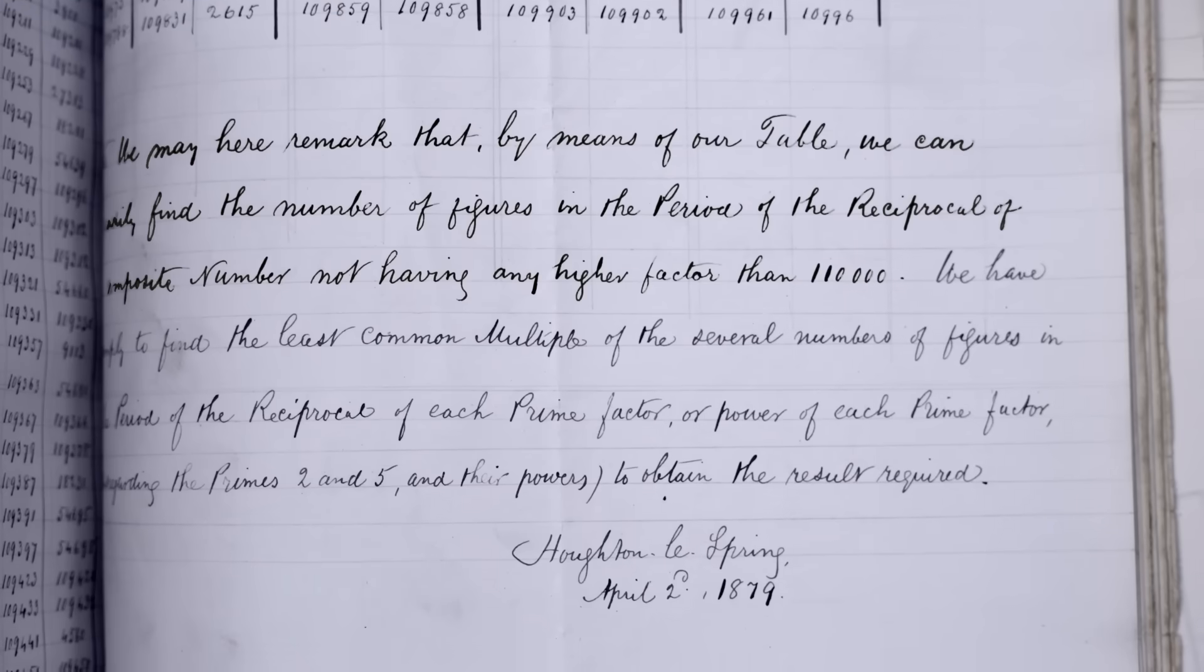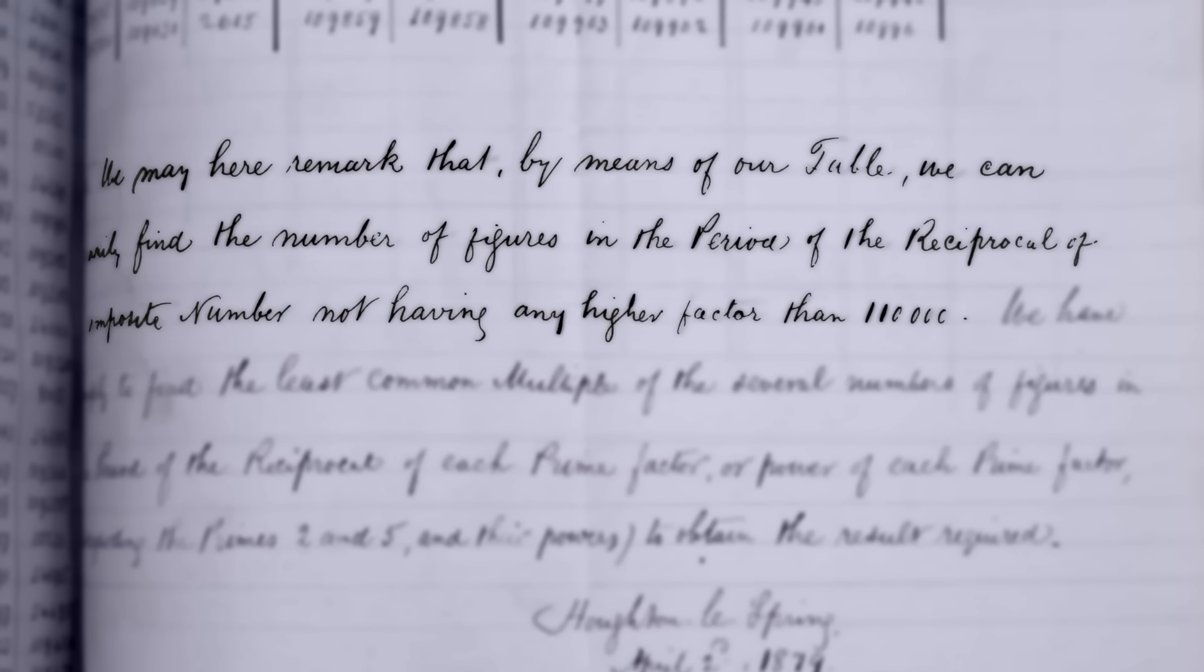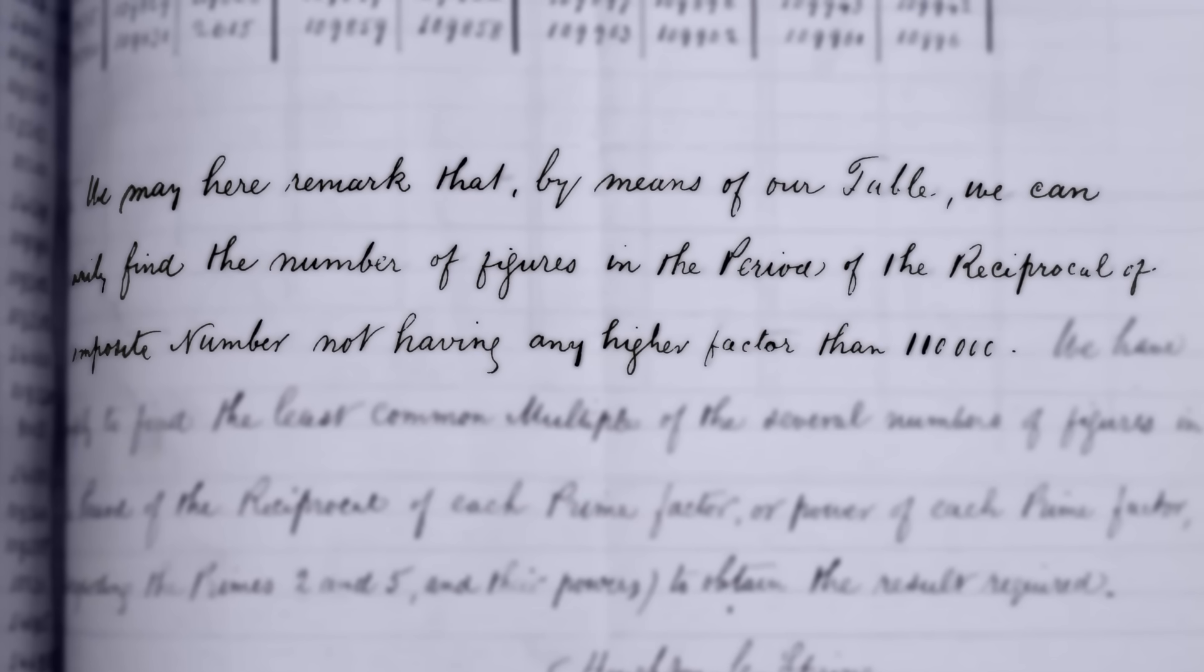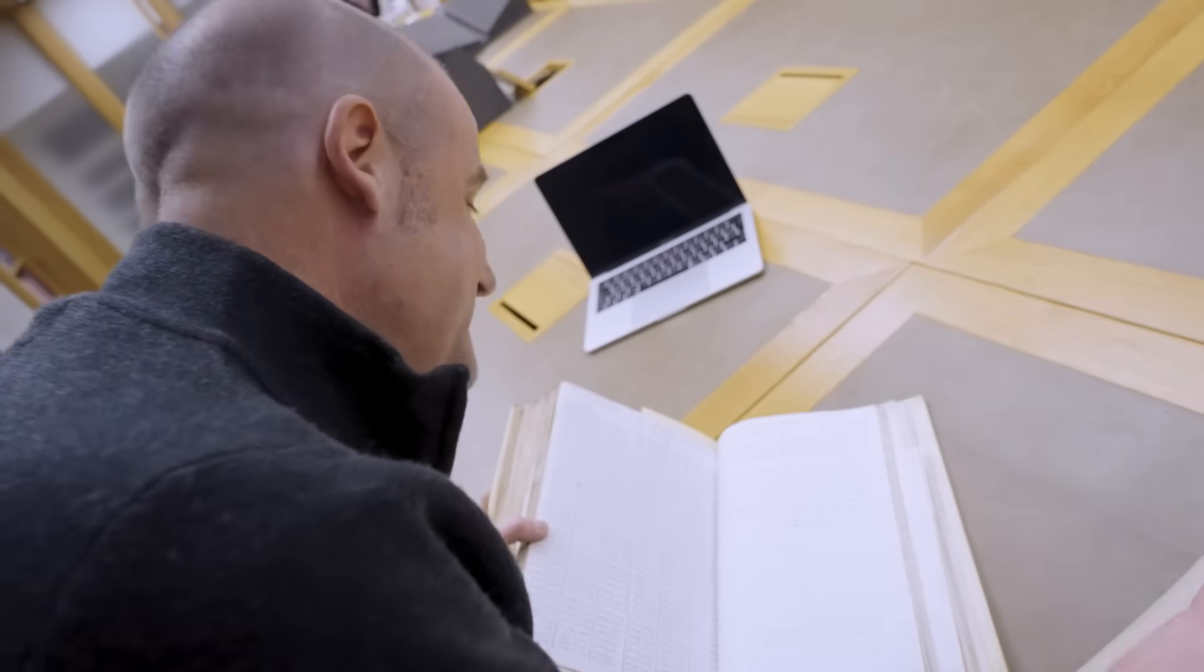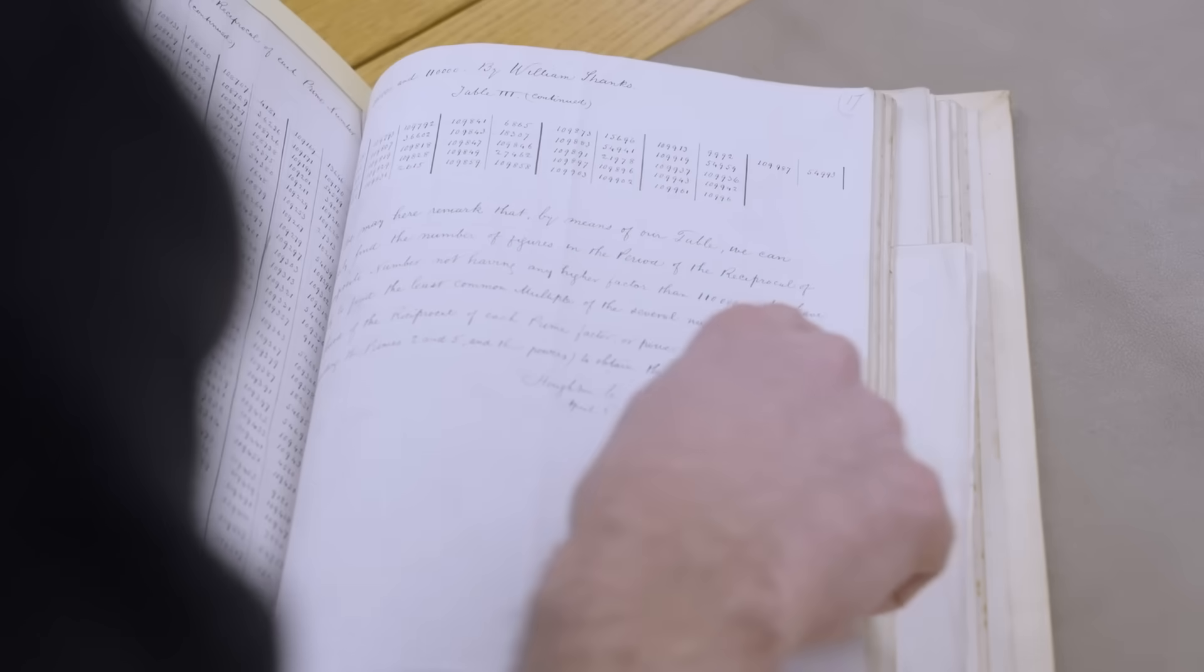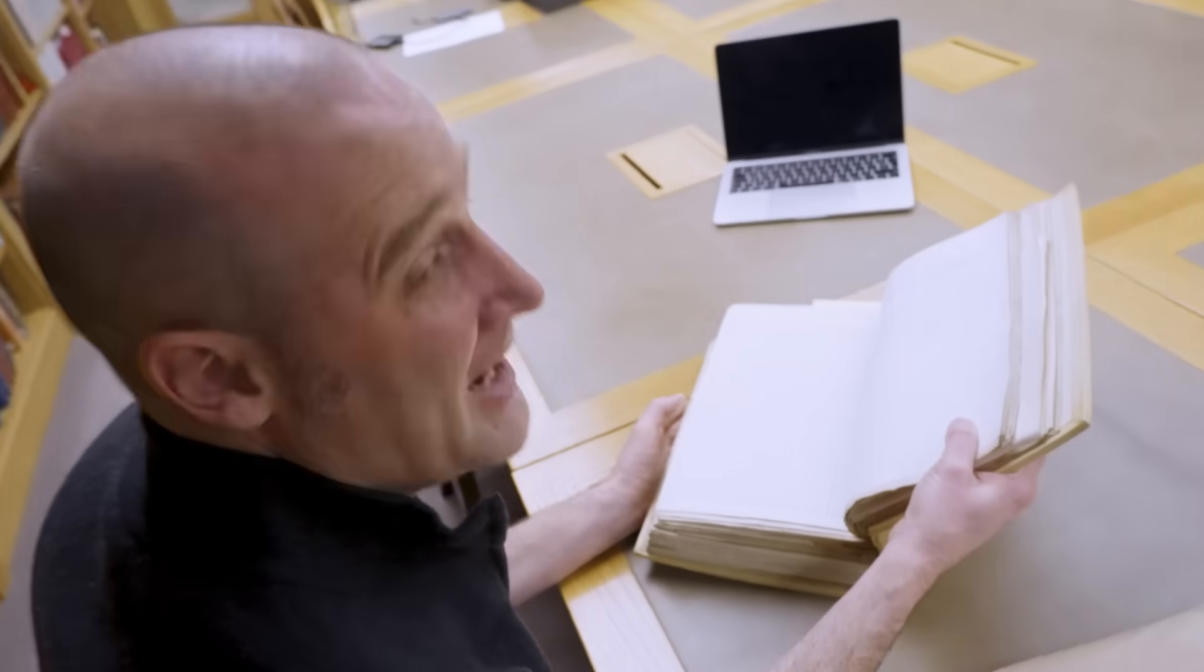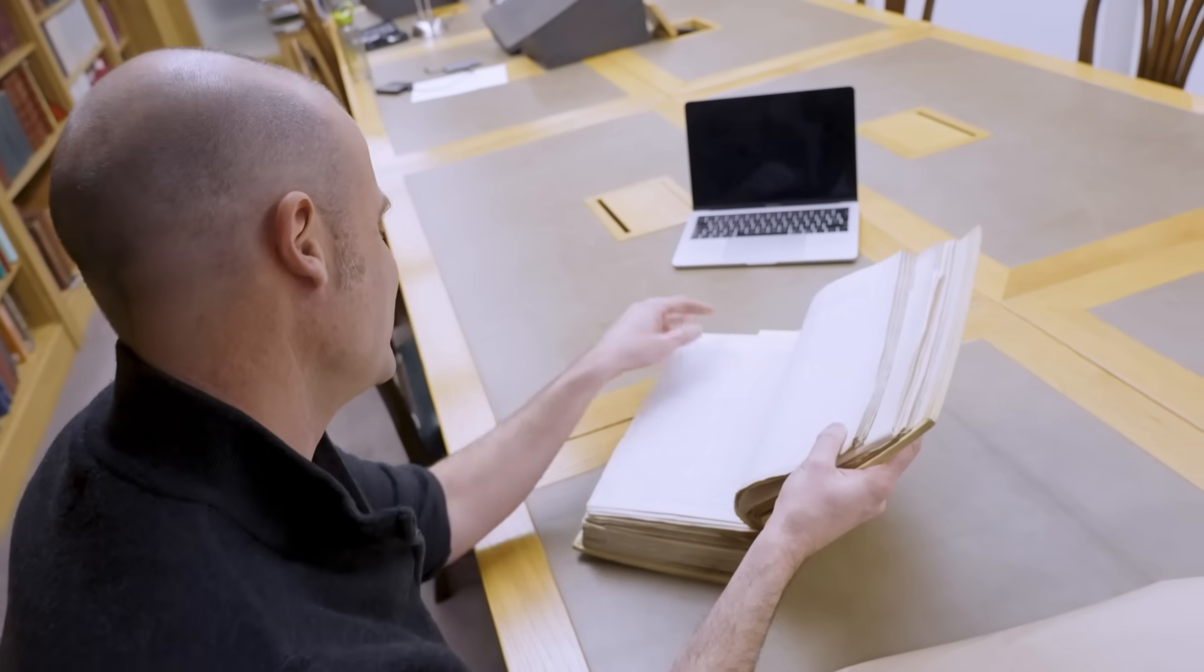So where did he get to on this one? Oh, there's a note at the end. Note. We may here remark that by means of our table, we can readily find the number of figures in the period of the reciprocals of a composite number not having any higher factors than 110,000. So he's basically said, these are useful because you can use the reciprocals of the primes to get all the reciprocals of the composites. Doesn't say why that's useful. We have simply defined the least common multiple of several numbers of figures. And he explains how to do that. And then he signs off. His only practical application for what he's done is you can use it to find another thing with no practical application. Nice. I like this guy. Yeah. I like the cut of his jib. Imagine how good his YouTube channel would have been. Ah, he definitely would have had a YouTube channel.